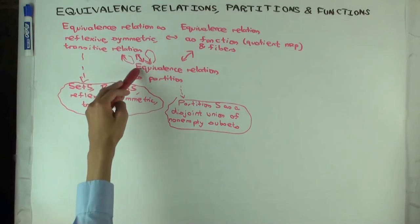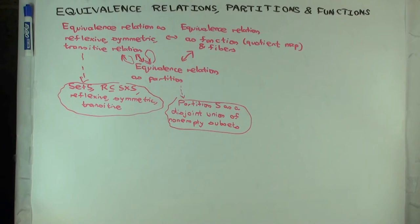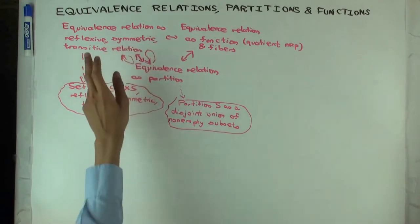If I have an equivalence relation as a relation, how do you construct it as a partition? You take the equivalence class, which is just all the things related to that element, and then you show that these equivalence classes form a partition. The reason being that any two equivalence classes are either exactly the same or they're disjoint, and so that gives you a partition. You end up using all three properties - reflexive, symmetric, transitive - in the proof.